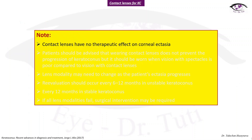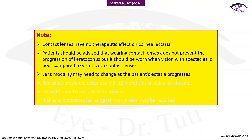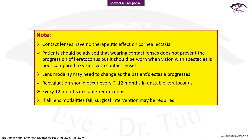It should be noted that contact lenses have no therapeutic effect on corneal ectasia. Patients should be advised that wearing contact lenses does not prevent the progression of keratoconus, but should be worn when vision with spectacles is poor compared to contact lenses. Lens modality may need to change as ectasia progresses. Re-evaluations should occur every 6 to 12 months in unstable keratoconus, every 12 months in stable keratoconus, and if all lens modalities fail, surgical intervention may be required.